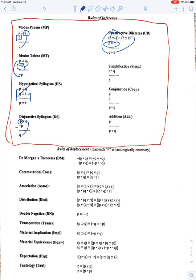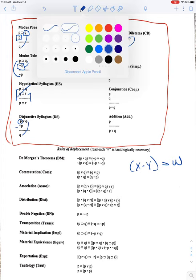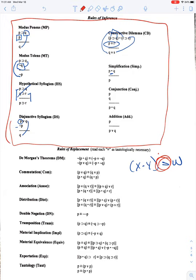Simplification, I'm noticing a lot of you are simplifying when you really shouldn't be simplifying. We have to have the main operator be the dot. If you have something like this, you cannot simplify because in this case your main operator is a horseshoe. You have to get this on a line by itself, then you can simplify.